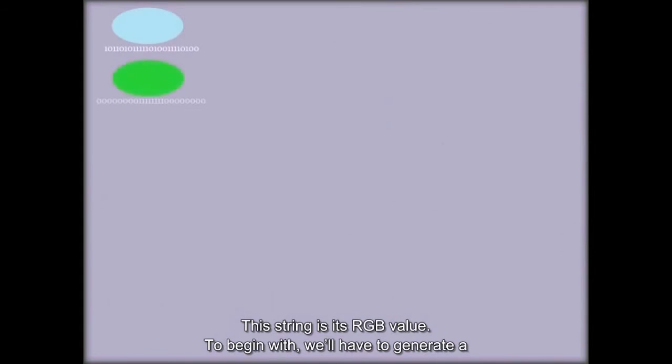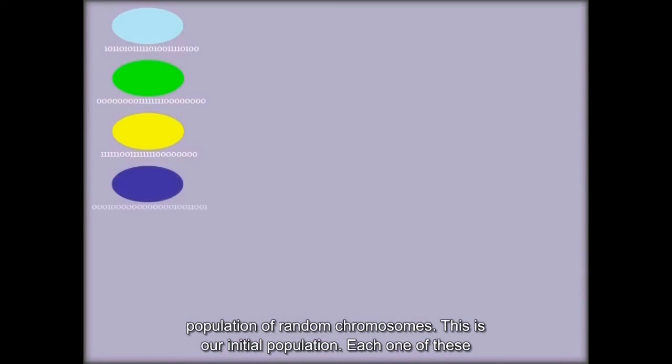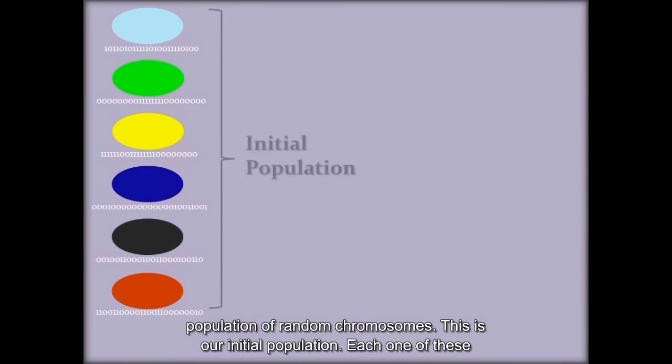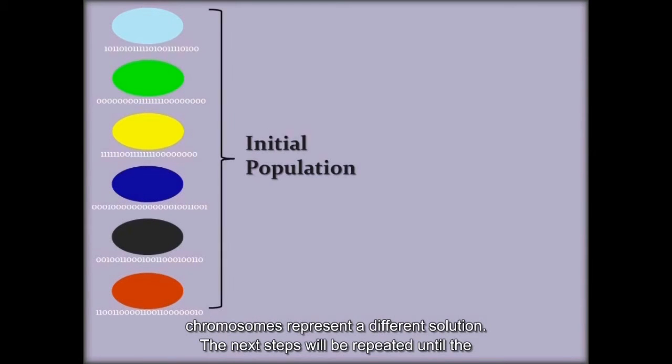To begin with, we'll have to generate a population of random chromosomes. This is our initial population. Each one of these chromosomes represents a different solution. The next steps will be repeated until the required solution is found, for us is the purple color.